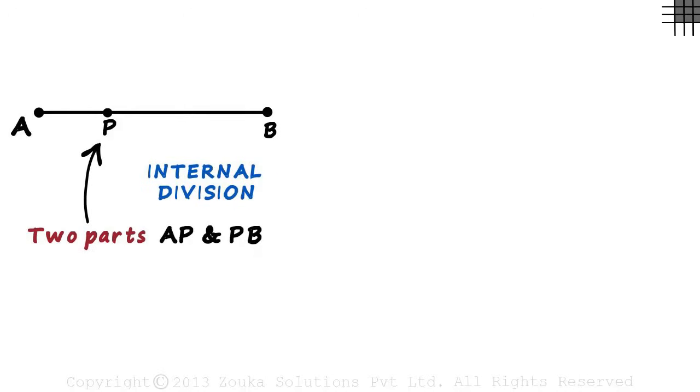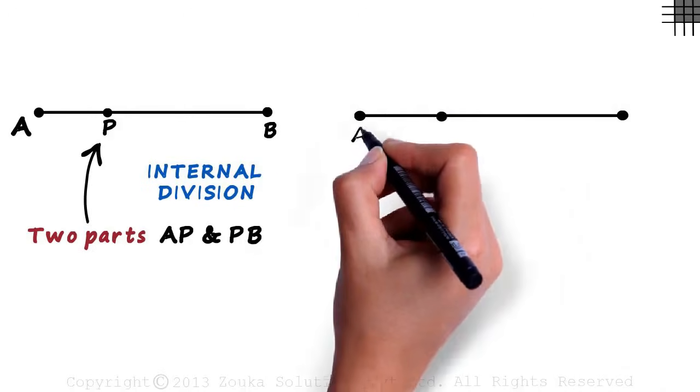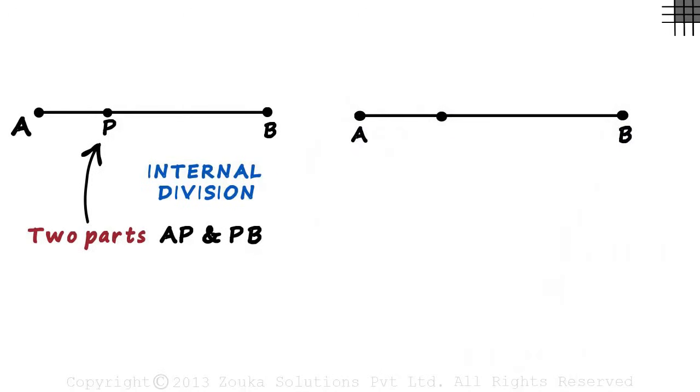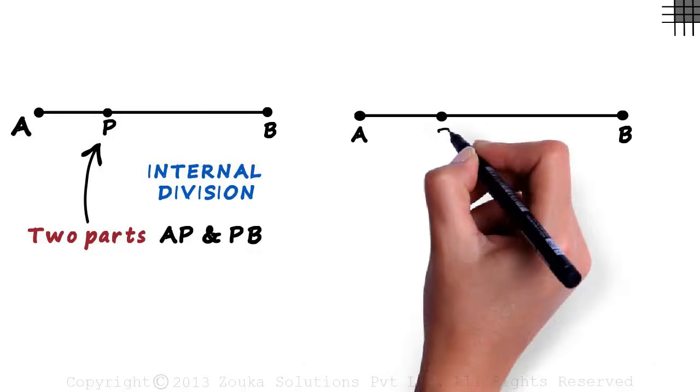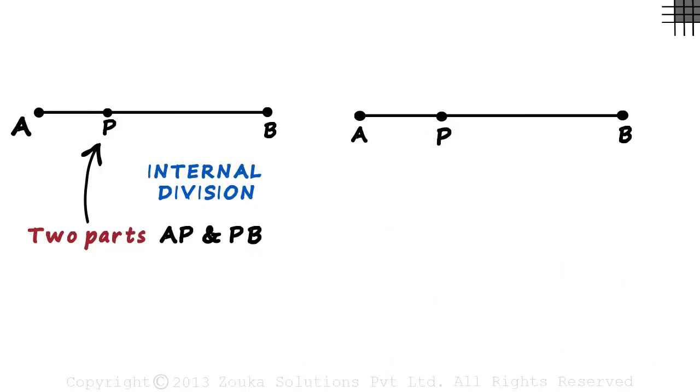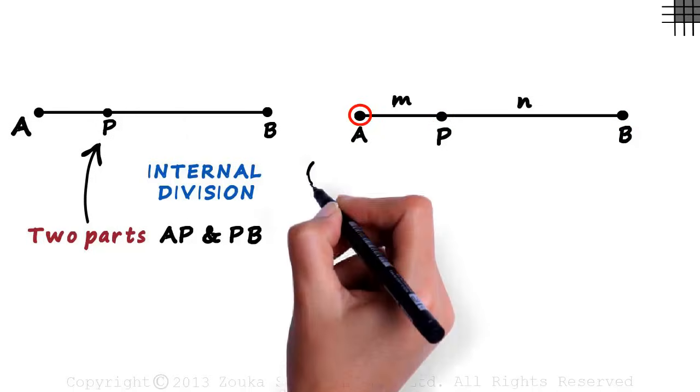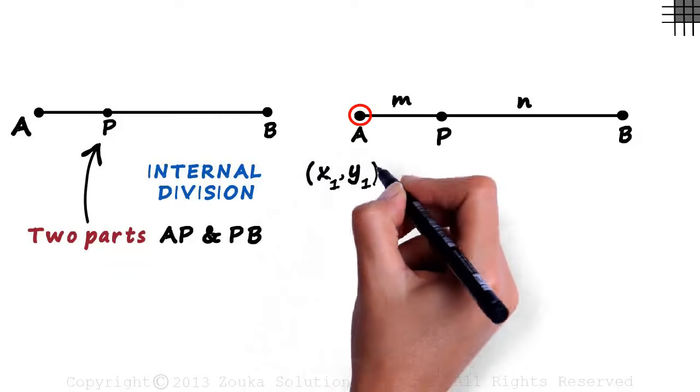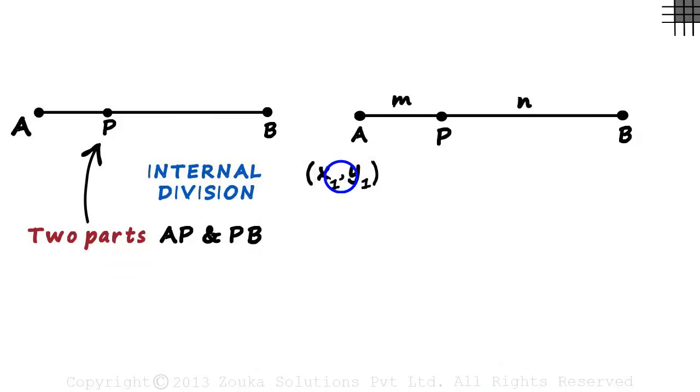Let me redraw the same diagram but this time we look at a few more details. Let us assume that the point P divides the segment AB in the ratio M is to N. If this segment is drawn on a graph paper, all points will have some coordinates. Let us assume that point A has coordinates x1 comma y1. x1 is the x coordinate and y1 is the y coordinate.